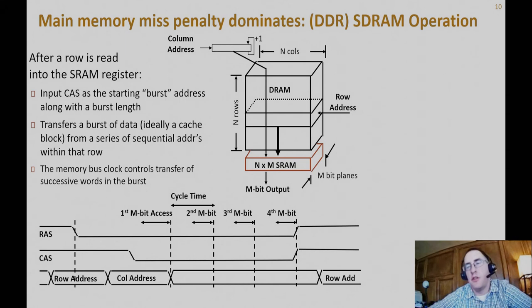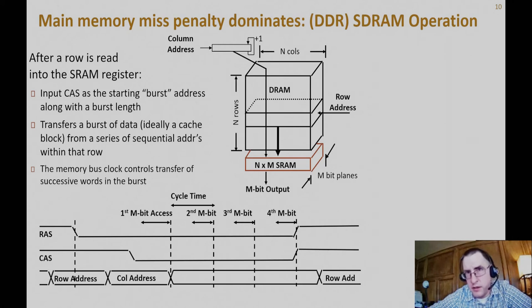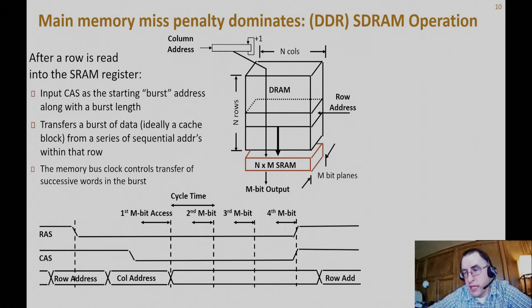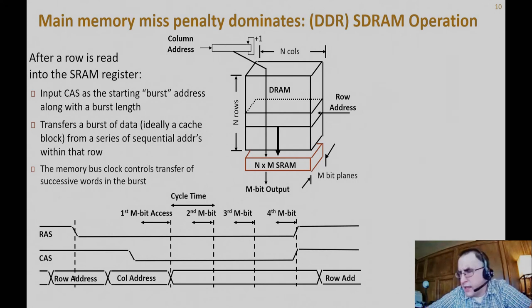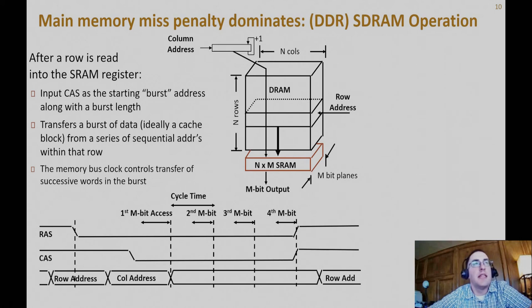When you want to read a value, you send the address to the memory. The memory controller transforms that flat memory address — a number between 0 and 2^n − 1 for an n-bit address space — into a two-dimensional row index and column index to specify where the byte you want is in that three-dimensional space. The bit plane gives the bytes you read.